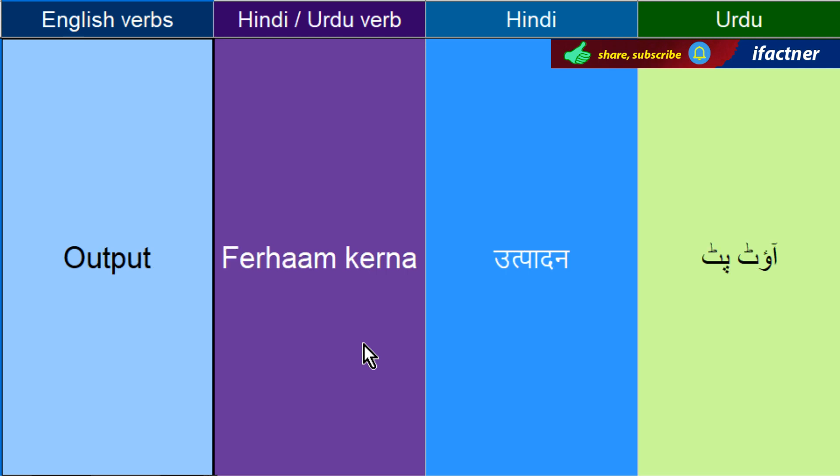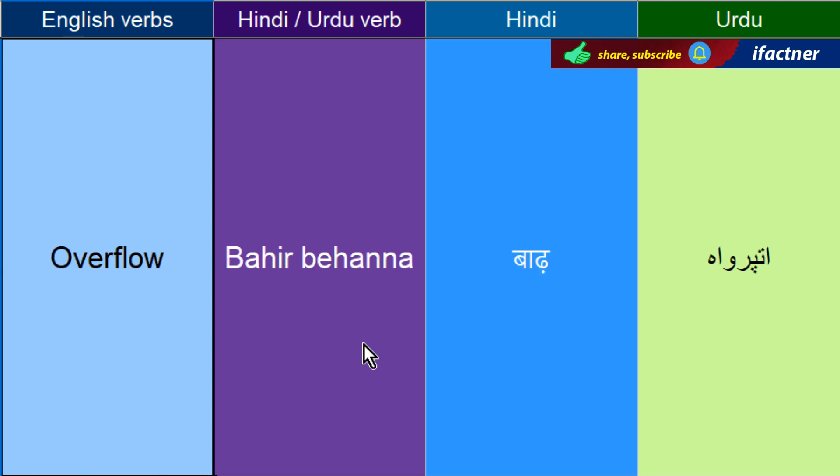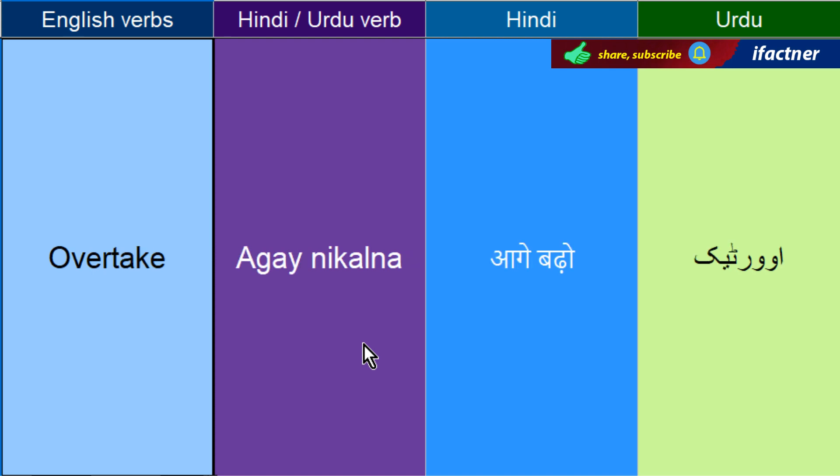Faraham kerna — Output. Aik hotay machine ki input — kisme aap kia dal rye ho, petrol dal rye ho, aur woh kia output day rhi hai. Bahir bahna ko kehengay — Overflow. Aargey nikalna — Overtake. Let's overtake that car — kauri se aagey nikal tay hain.